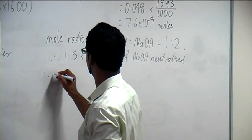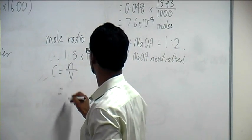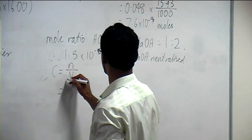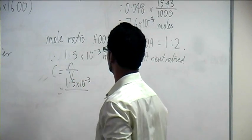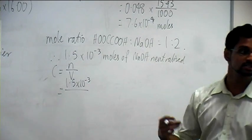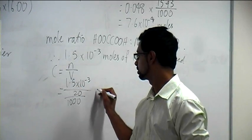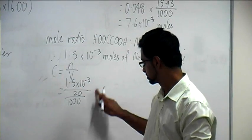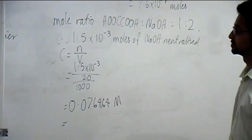So therefore, concentration. Now, we know the concentration equals moles divided by volume. Now, we know our moles of 1.5 times 10 to the minus 3. The volume of NaOH that we neutralized every time, 20 mL. And now we're going to worry about significant figures.